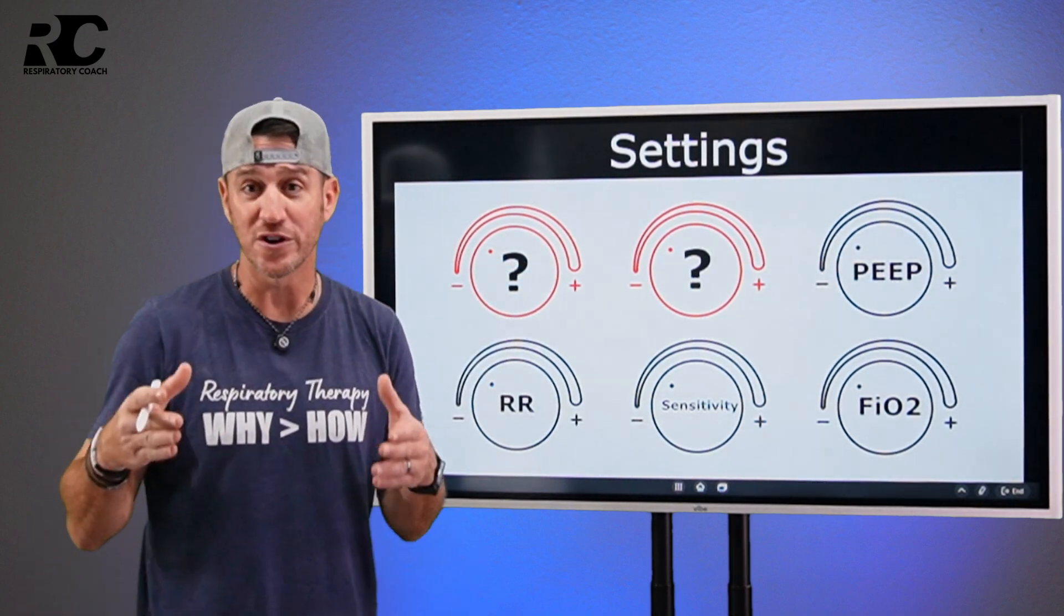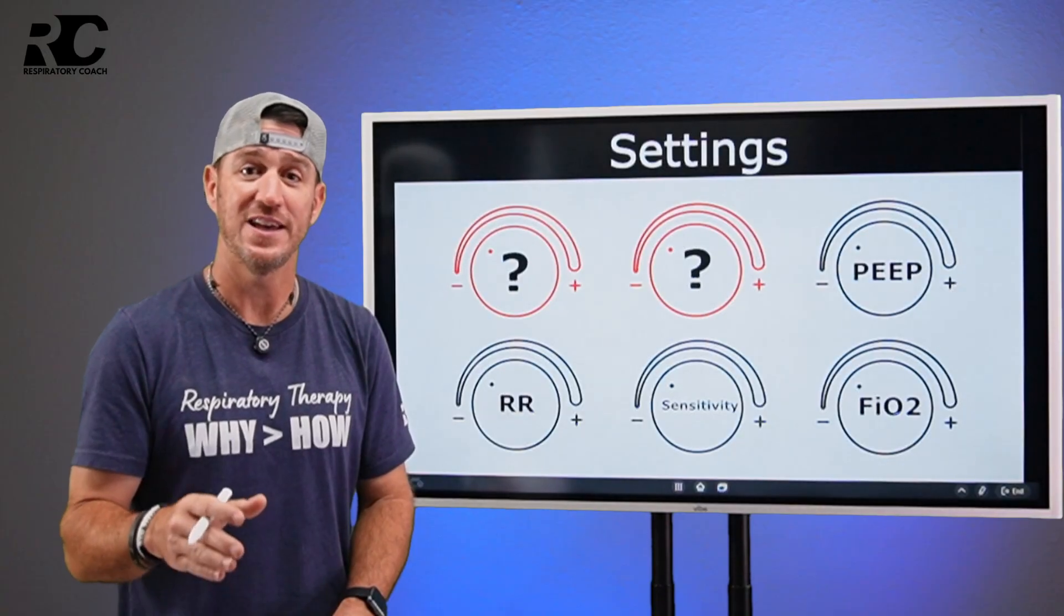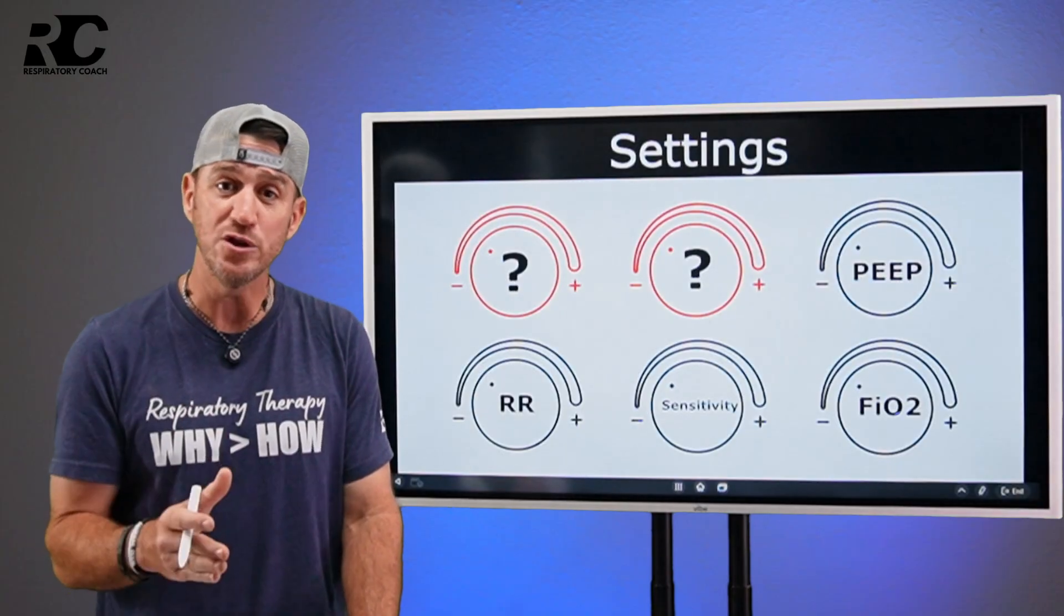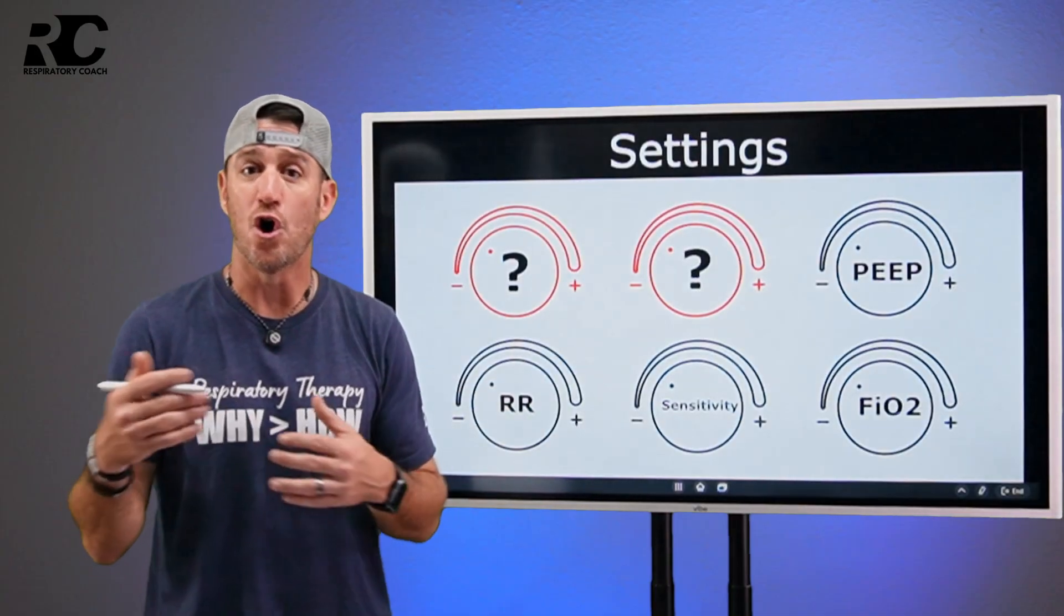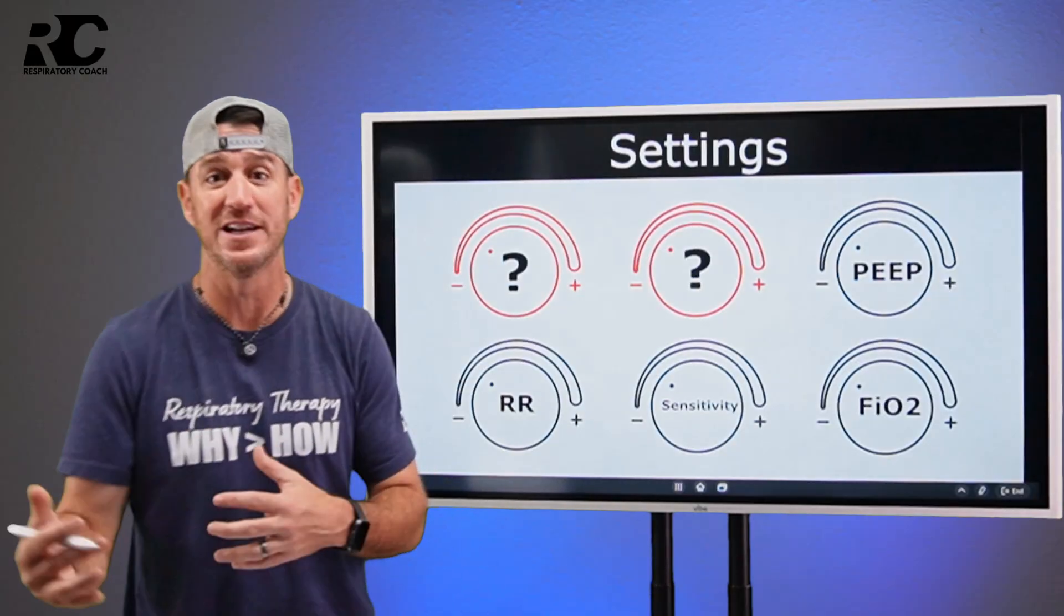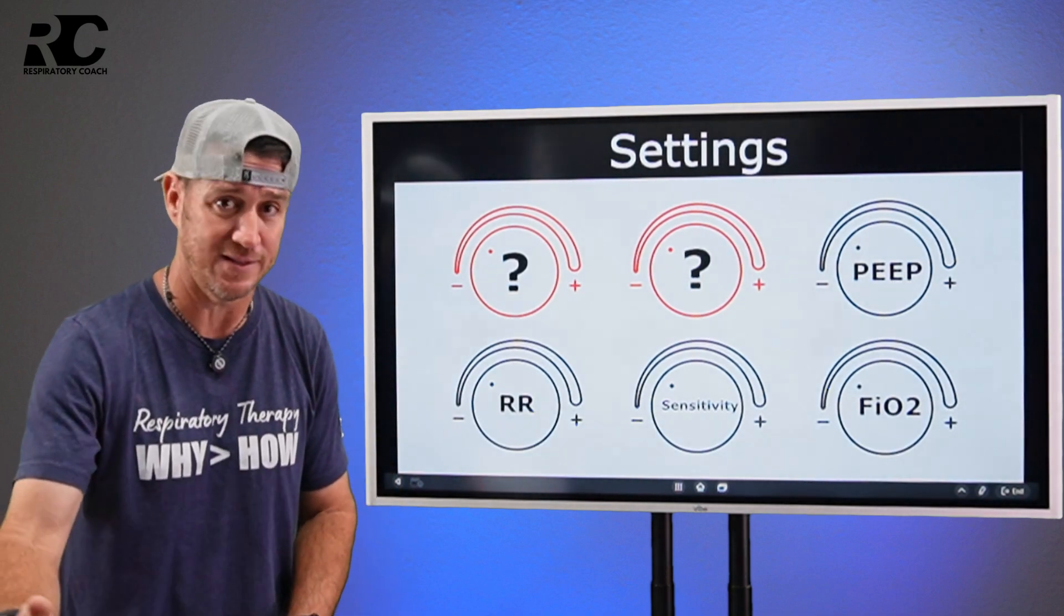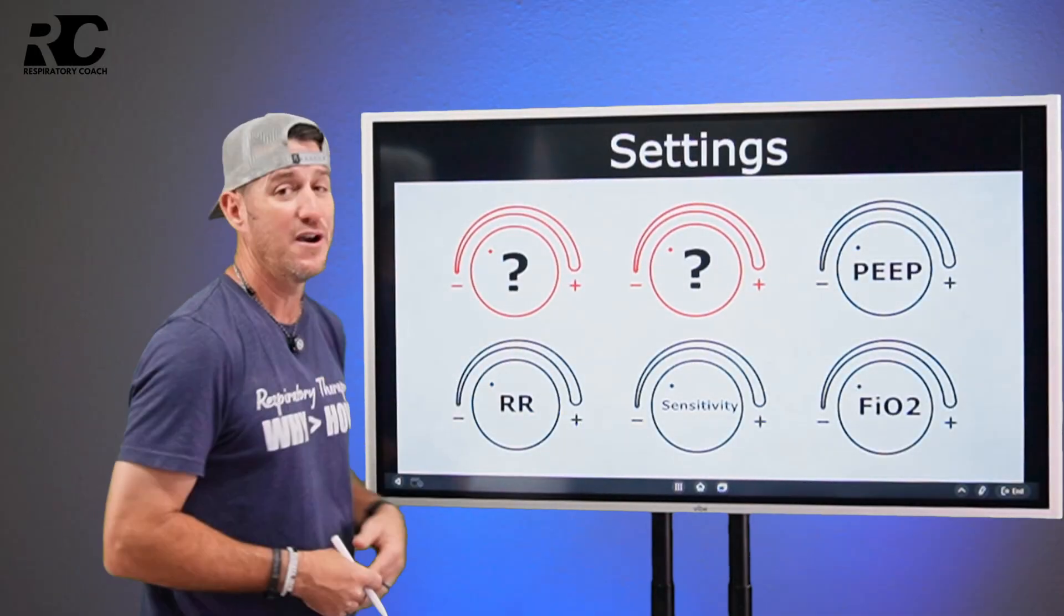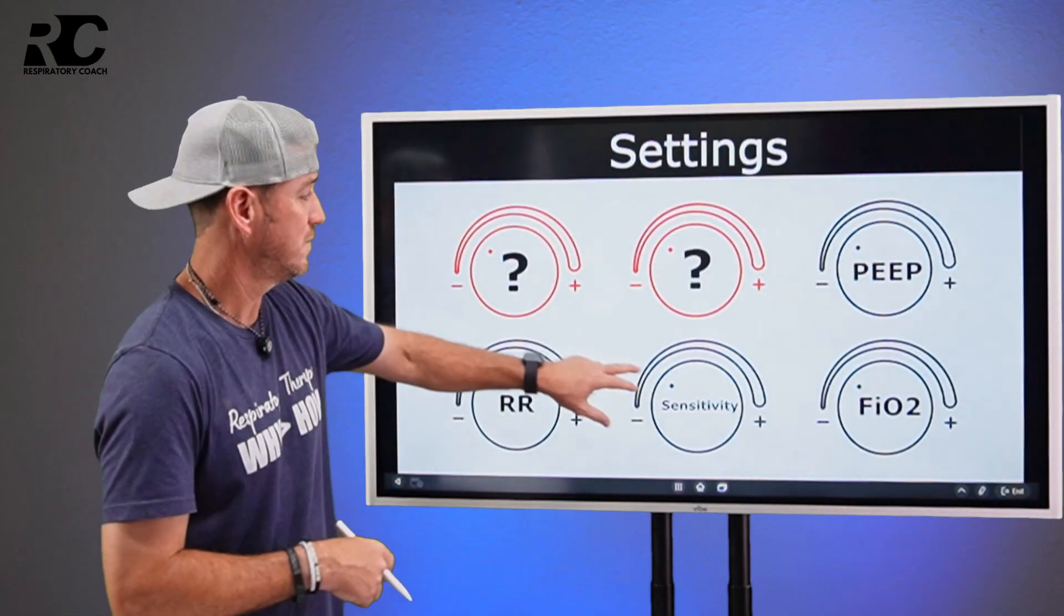Those are your key core six basic settings that you will see in mechanical ventilation. It's very important to grasp these key settings because when you start to learn advanced modes of mechanical ventilation, you will see these settings alter slightly. You will see where you may not see all these. You may see something a little different, but without this foundation, then the advanced modes will never make sense. Remember foundation first, everything else follows.